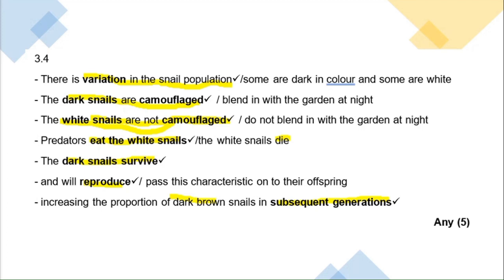Therefore, the dark snails survived, reproduced, and there will be a higher proportion of dark brown snails in subsequent generations. That is how you structure a natural selection answer — it is in your exam guideline as the framework for Darwin's theory. Any questions? Moving on to the last question and then we'll do the consolidation in the last 20 minutes.